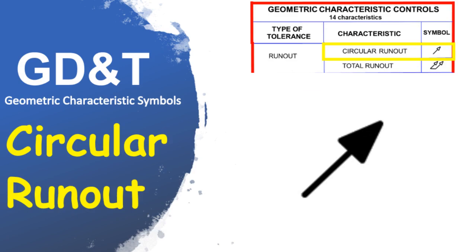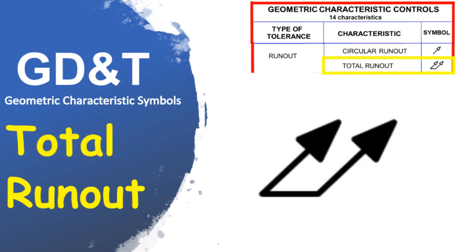Circular runout is how much a feature varies with respect to another when the part is rotated 360 degrees around the datum axis. Runout is used to control wobble of a circular feature or the variation in the feature's rotational axis. Total runout is how much one entire feature or surface varies, controlling the amount of variation in the surface as the part is rotated 360 degrees over the entire length of the part. Total runout is always RFS — regardless of feature size.